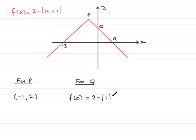So 2 take away 1 is 1. So the y coordinate here of q is going to be 1 when x is 0. So we can say that q has coordinates 0, 1.